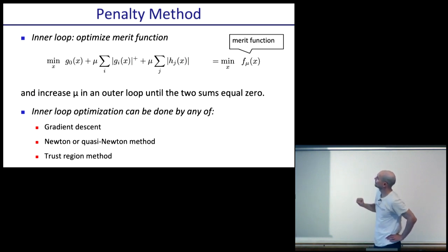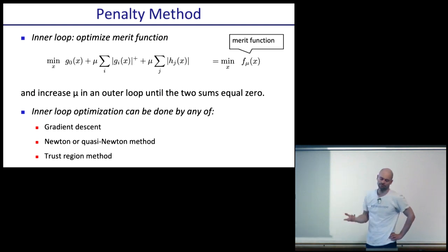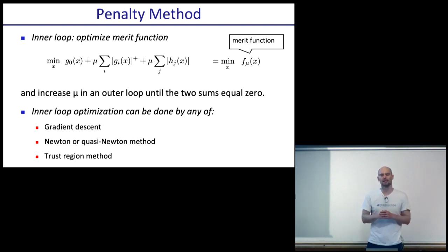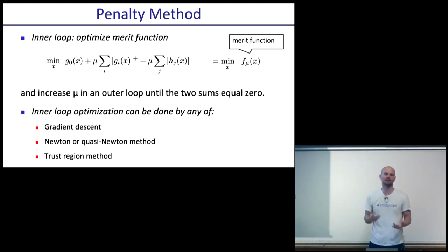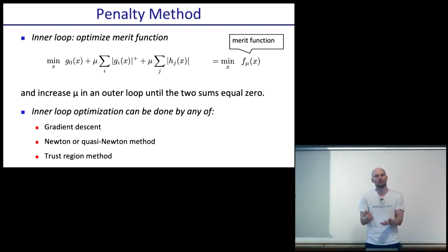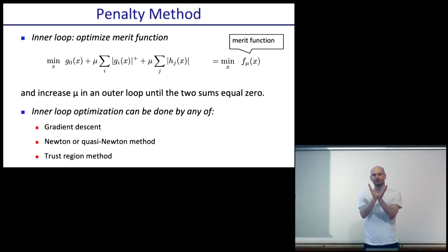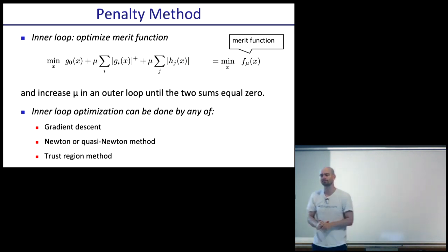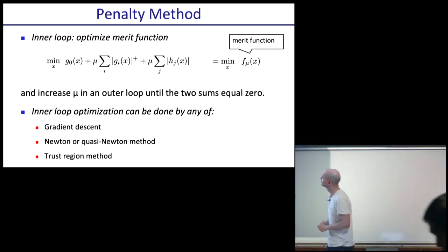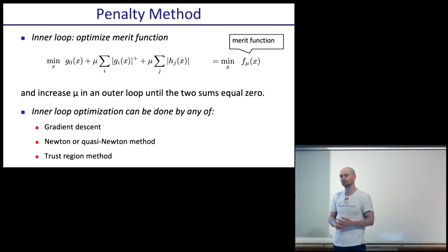The first two methods are fine to run, but trust region methods are often preferred because these penalty terms have a very specific local structure you can exploit in your inner loop directly, rather than just looking at the first-order approximation. The first-order approximation of these penalty terms is not great — they're linear pieces that together form an absolute value.